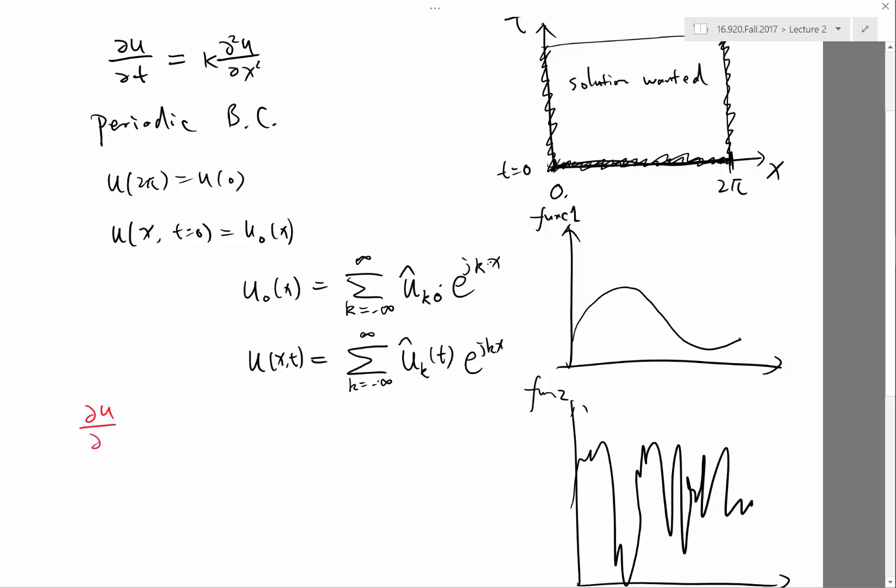The first term is partial u, partial t. Now with the Fourier series, what is partial u partial t? Can somebody tell me? Do I still have this summation? Yes.